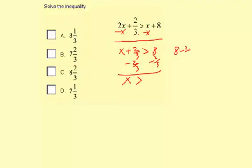So 8 minus 2/3, we have to make the 8 into 1/3rds first, so that's 24/3 minus 2/3. So 24/3 minus 2/3 is 22/3. So x is greater than 22/3.